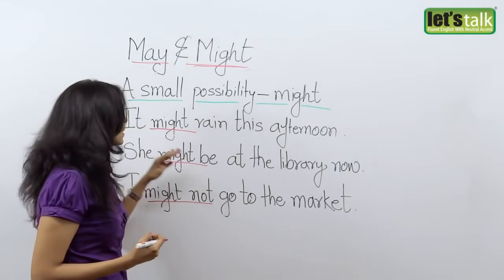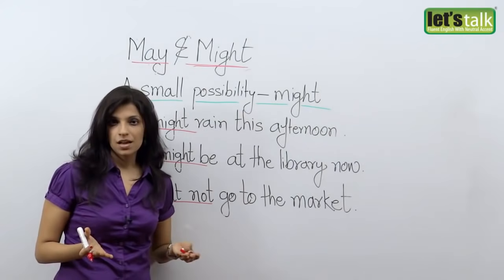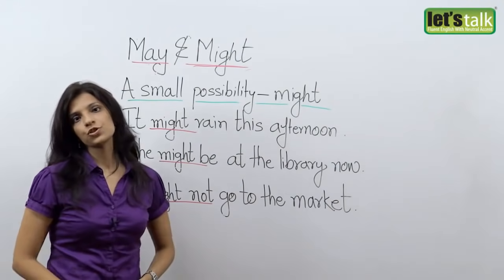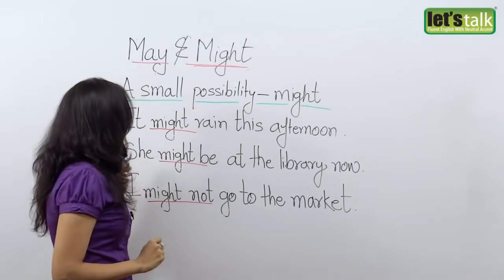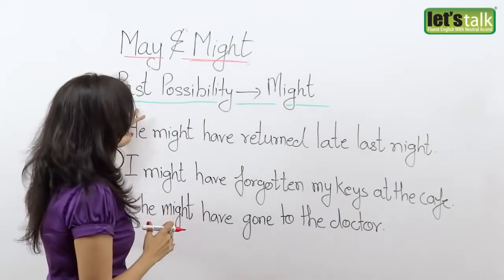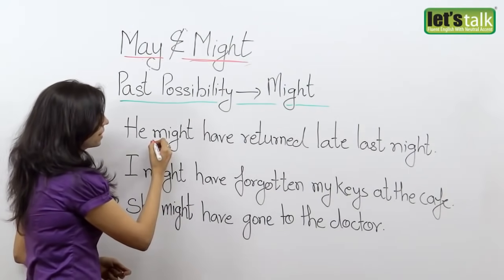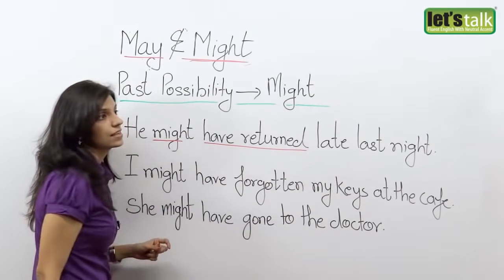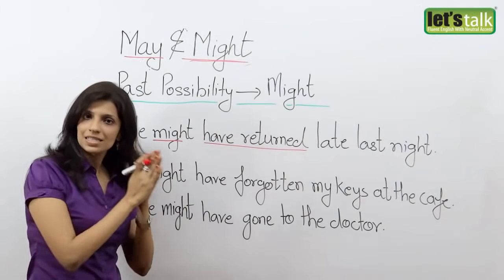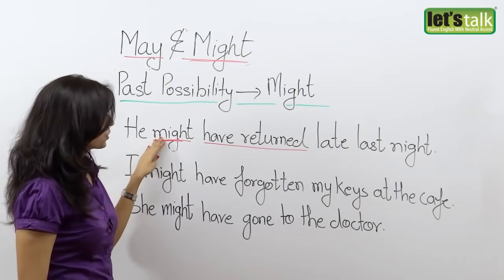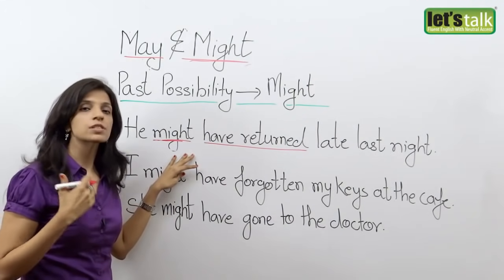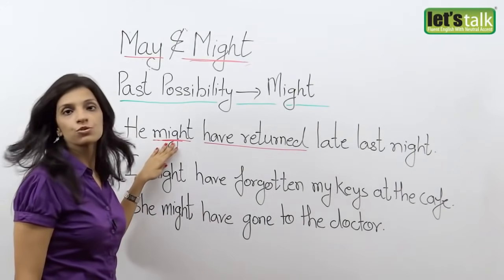Friends, please remember: may and might are often interchangeable. You can even say 'It may rain this afternoon.' But if you exactly want to say the chances are very less, then it's always better to use might. Now I'm going to tell you how you use might in the past tense. We use might when you want to talk about a past possibility — something you're not sure of. Because you're talking about a past possibility, it is always better to use might. Might is the past of may, so when you talk about a past possibility, it's better to use might.